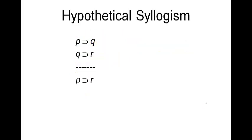Hypothetical syllogism says that if you have 'if p then q' and 'if q then r', you can conclude 'if p then r'. You can verify that yourself with a truth table — it's sort of intuitive.